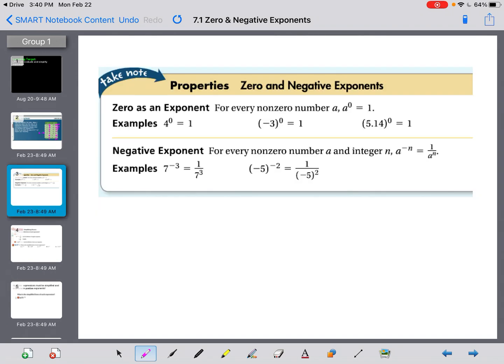First set of vocab is 0 as an exponent. Every non-zero number that has 0 as an exponent equals 1. 4 to the 0 power equals 1. Negative 3 to the 0 power, still 1. Decimals to the 0 power, still 1. Every non-zero number that has a 0 exponent is equal to 1.